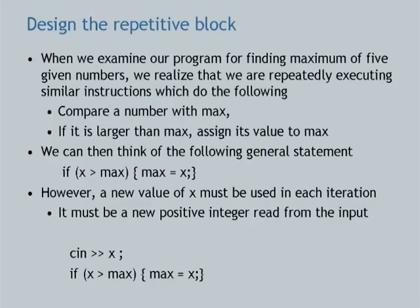We recall the program for finding the maximum of five numbers: cin >> B; if B > max, max = B; cin >> C; if C > max, max = C, and so on. What we were doing basically is comparing a number with max, and if it is larger, assigning its value to max. That is the crux — the action which we repeatedly executed. So we can think of the general statement: not A, B, C, D, E, but just any number x.